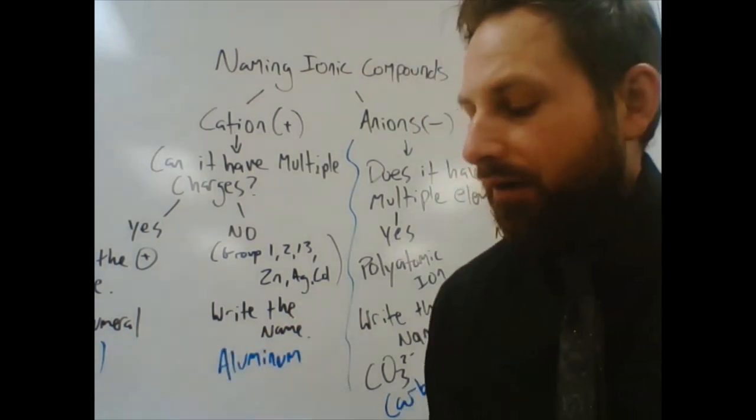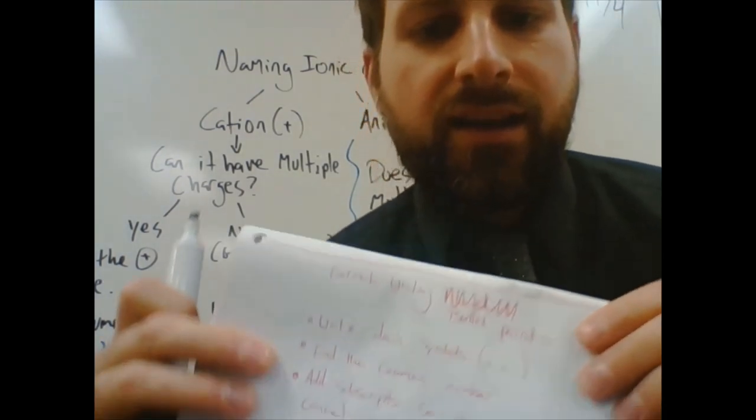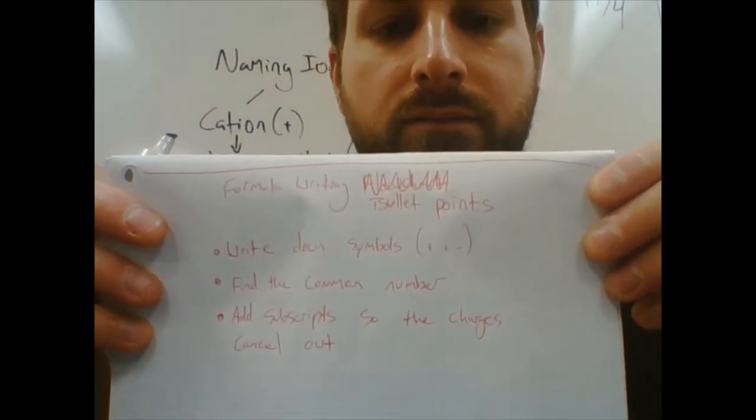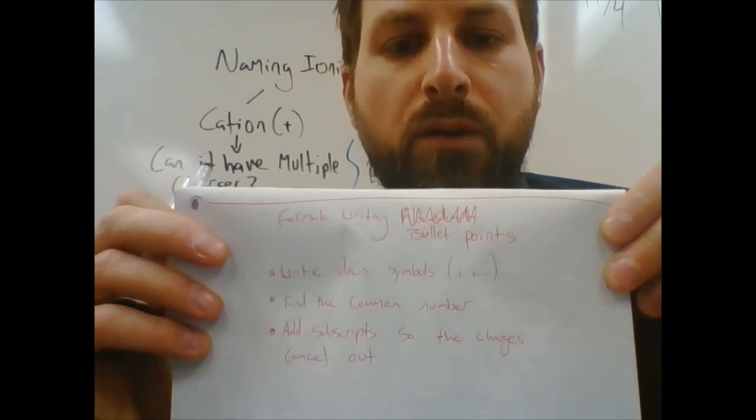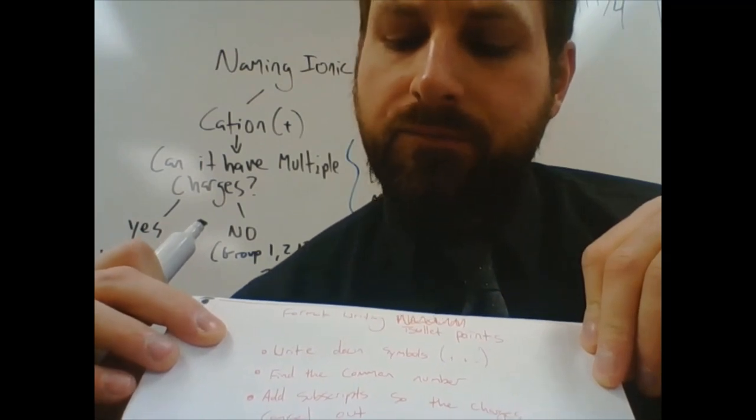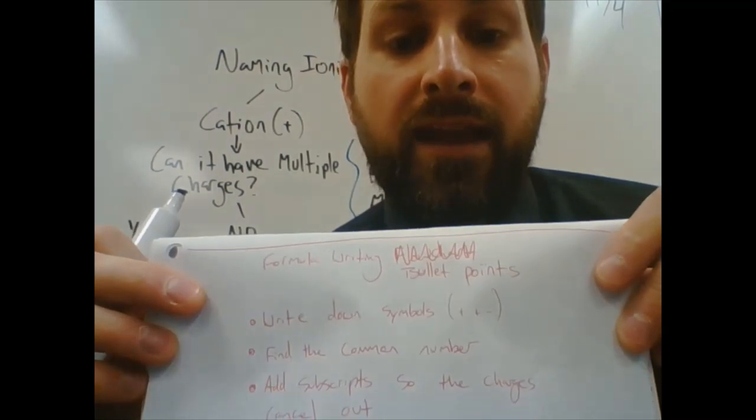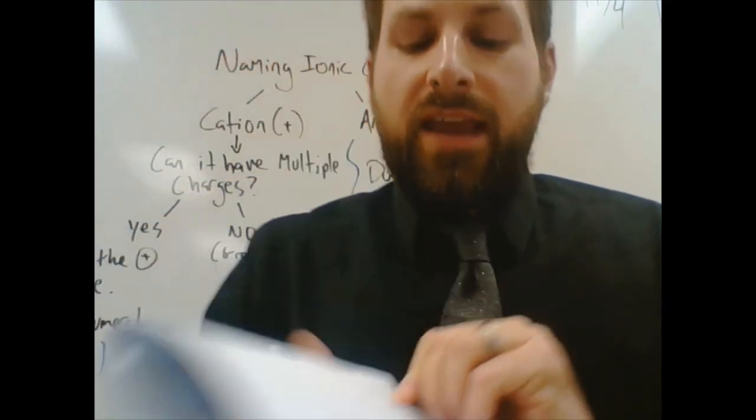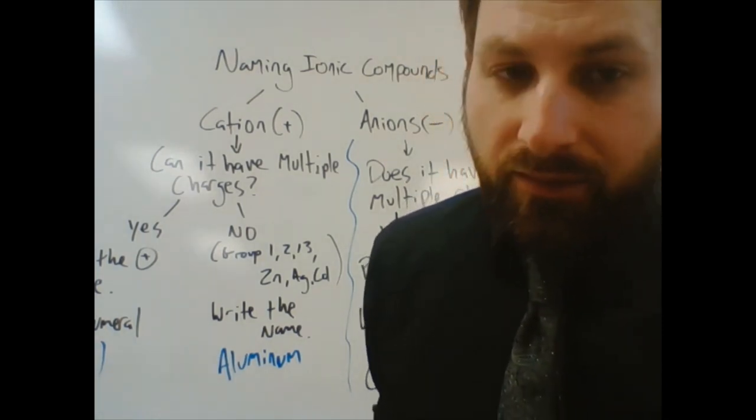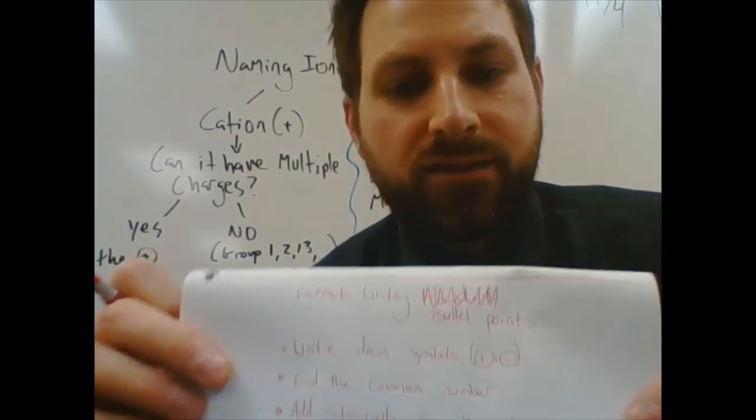For the bottom part, I'm not going to rewrite all this stuff. I'll just talk at you guys real quick. So, for the bottom part, when you are formula writing, all right, these are my bullet points. Step one. So, go ahead and write this down. You just write down the symbol. You write down your cation symbol and your anion symbol. Like, Na plus and Cl minus or something like that.